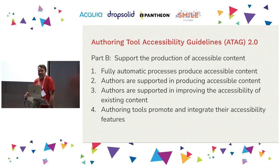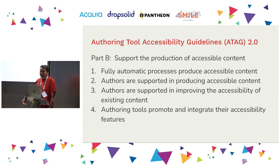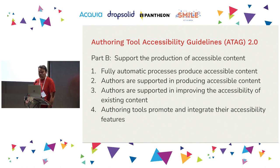I did mention ATAG — the authoring tool accessibility guidelines — at the beginning. The high-level points: we want to make sure that the production of content is as accessible as possible. Any fully automated processes should produce accessible content. Authors are supported in producing accessible content. Authors are supported in improving accessibility of existing content. And authoring tools should promote and integrate their accessibility features. Those are some of the elements that W3C has come up with in their ATAG guidelines.